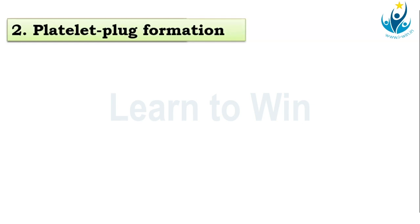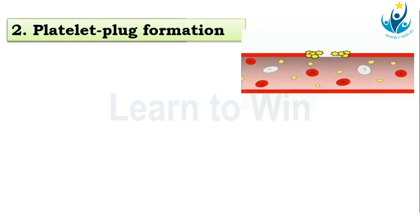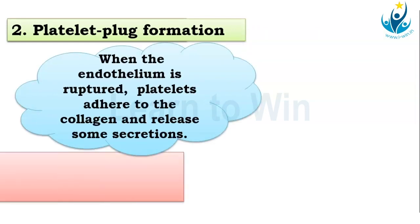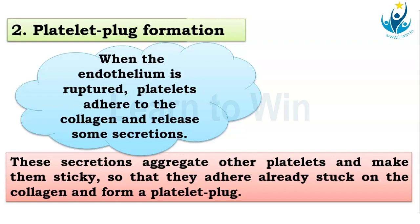Then the collagen fibers bring the platelets — all the platelets leaking from the damaged area get attracted to the collagen fibers. Once they get attracted to the collagen fibers, they form what is called a primitive platelet plug. These aggregations make platelets sticky so they adhere and form a platelet plug. This formation of the platelet plug is called primary hemostasis. However, this plug is not strong enough to withhold everything.